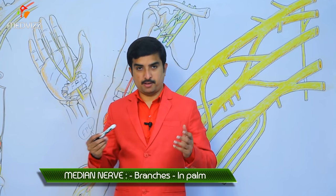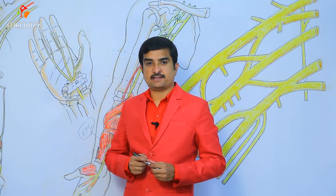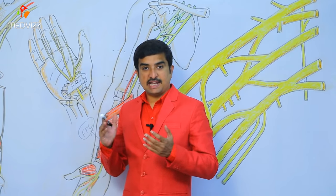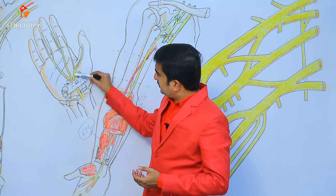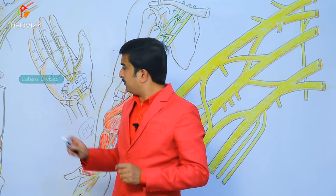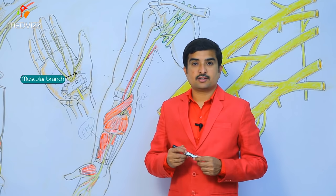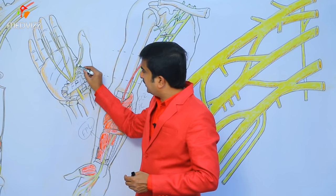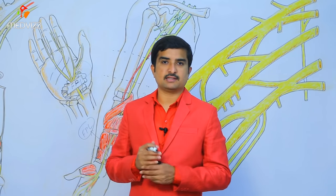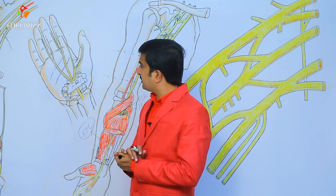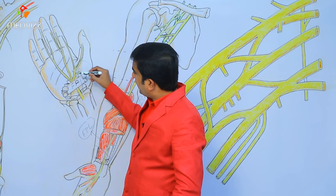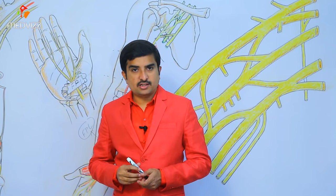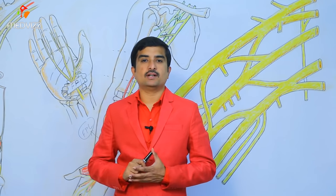In the palm, the median nerve passes deep to the flexor retinaculum and divides into lateral and medial divisions. The lateral division gives off a recurrent branch — also called the muscular branch — which innervates the thenar muscles. It also gives off three digital nerves supplying the lateral side of digits including the thumb. The recurrent branch curves around the distal margin of the flexor retinaculum and passes proximally over flexor pollicis brevis.